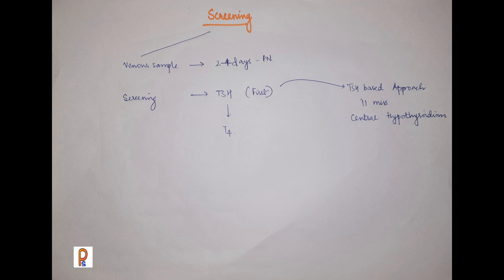Newborn screening is very important because clinical features develop slowly, and by the time you identify them clinically, the child may have already developed intellectual disability. Screening is done from a venous blood sample after 48 hours. The maximum institute strategy uses TSH as the primary screen. If TSH is at higher levels, proceed to T4 and further investigation.